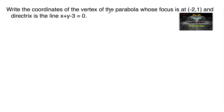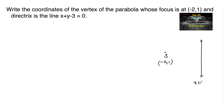Write the coordinates of the vertex of the parabola whose focus is at (-2, 1). The focus is (-2, 1) and the directrix is the line x + y - 3 = 0. Both are given, so we need to find the coordinates of the vertex.